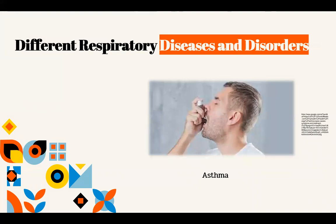Asthma. This is a chronic disease wherein the airways to the lungs become inflamed. The patient may suffer from coughing or wheezing, shortness of breath, and tightness in the chest. Asthma can be genetic or can be caused by allergens in the environment or air pollution. This is a long-term disease and cannot be fully cured. However, its symptoms can be prevented or lessened by avoiding its causes. During an asthma attack, the patient can also inhale medicines that can alleviate the symptoms.